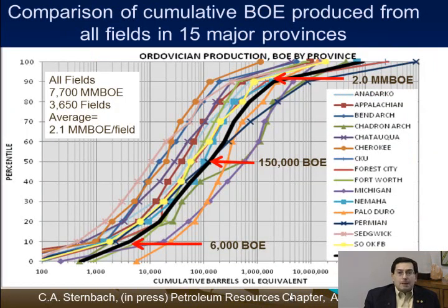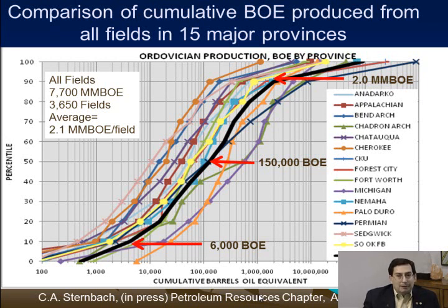This diagram shows all of the fields represented by a black line, arranged by percentile. The straight average of the 7.7 billion barrels across 3,650 fields is about 2.1 million barrels per field. But the reality is that some very large giants dominate the production, while there are very many small fields — so the straight average does not work well in understanding these fields in aggregate or as we look at any one of the individual basins, which are shown by the various colored lines.